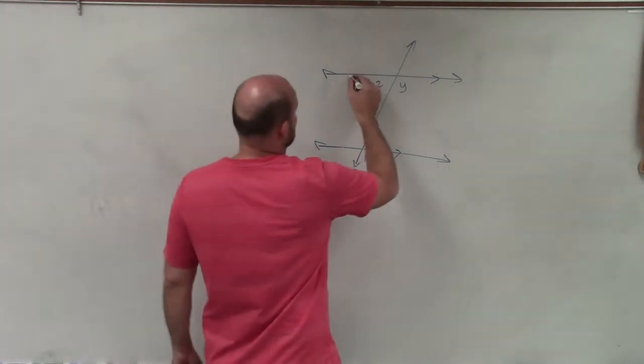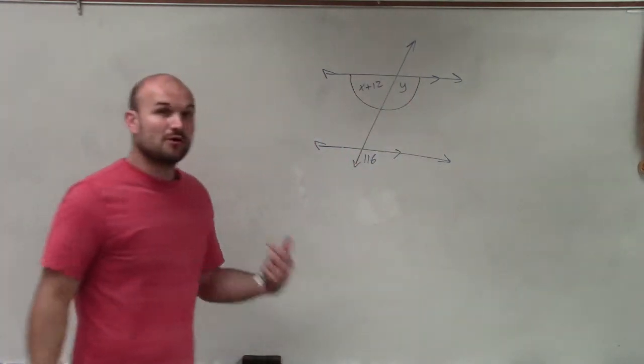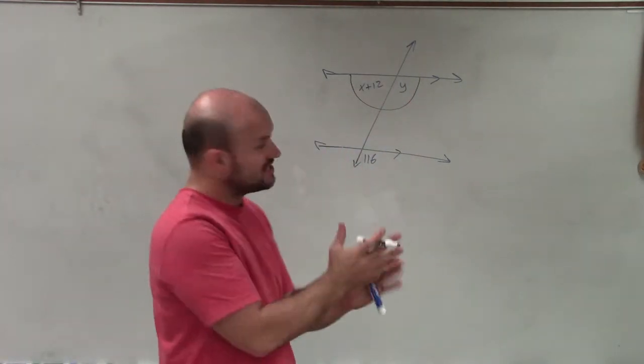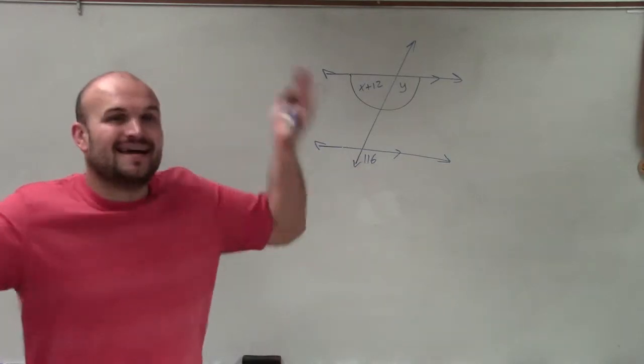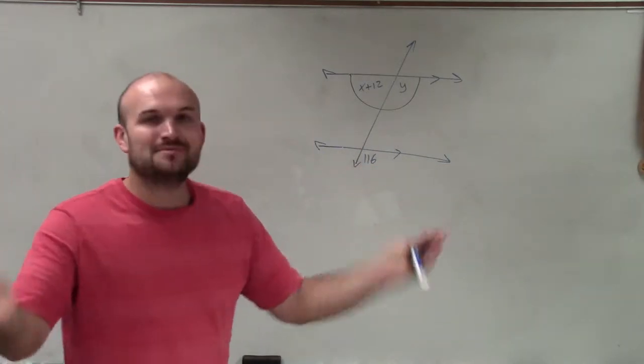When I look at this, I see x and y form a linear pair at the intersection of two lines. They form a linear pair, they make a line. That means they're supplementary and add up to 180.